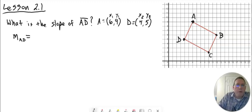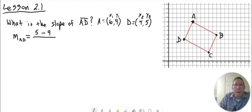So we're going to put Y2 — in this case Y2 is 5 — minus Y1, which is 9. Then over X2, which is 4, minus X1, which is 6. So we have 5 minus 9 over 4 minus 6.